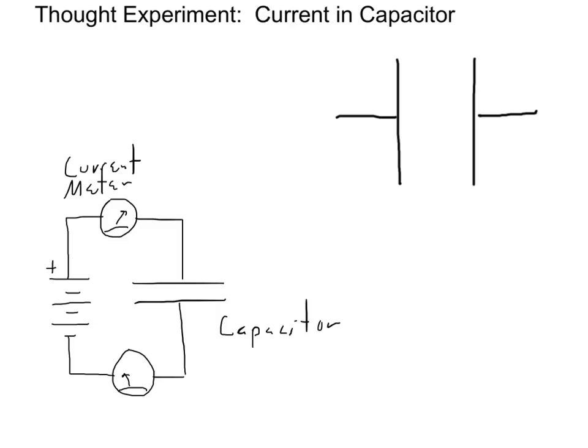To understand displacement current, let's do a thought experiment looking at current that flows through a capacitor, using this basic circuit. We're going to assume that we hook up a battery at time t equals zero and look at what happens. Equivalently, you could think about a switch that we close at t equals zero, which allows current to flow. Before we hook up the battery, we know there's no charge across the capacitor.